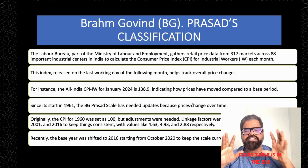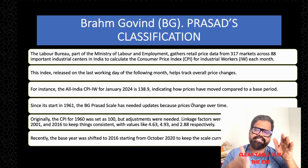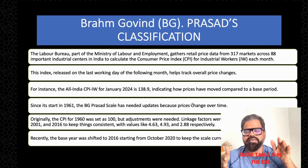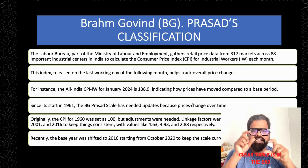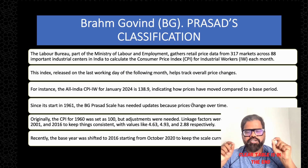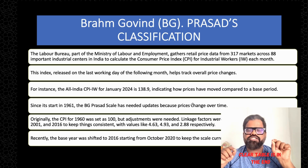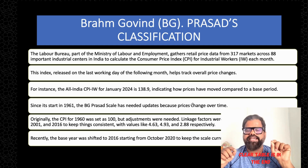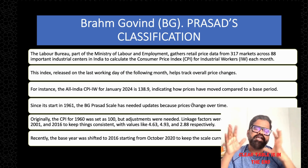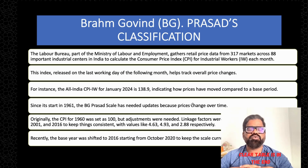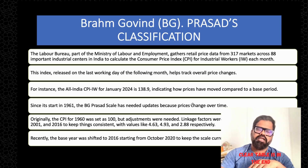It started in 1961 and in 1960 the base was considered as 100. Revisions have been done — in 1982, 2001, and 2016. The linkage factor for 1982 is 4.63, for 2001 is 4.93, and for 2016 is 2.88. Recently the base year has shifted from 1961; now 2016 is considered as the base year.